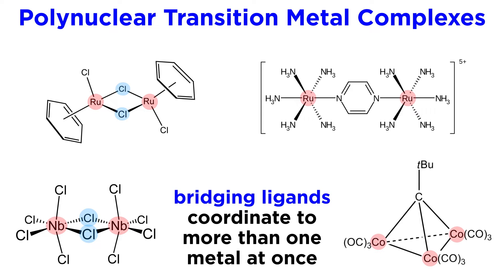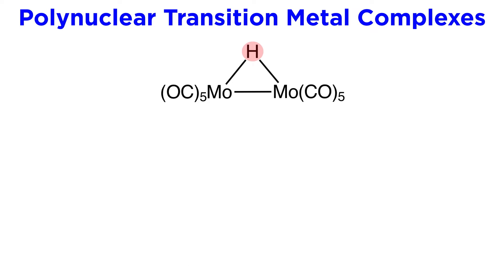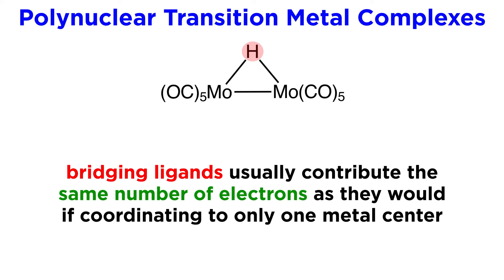Bridging ligands are ligands that are coordinated to more than one metal center at the same time, a feature that is expressed by the symbol mu preceding the ligand in the chemical formula. One counterintuitive aspect of bridging ligands is that these ligands will usually contribute the same number of electrons to the complex as they would if coordinated to a single metal atom, even though we will depict two bonds instead of one.